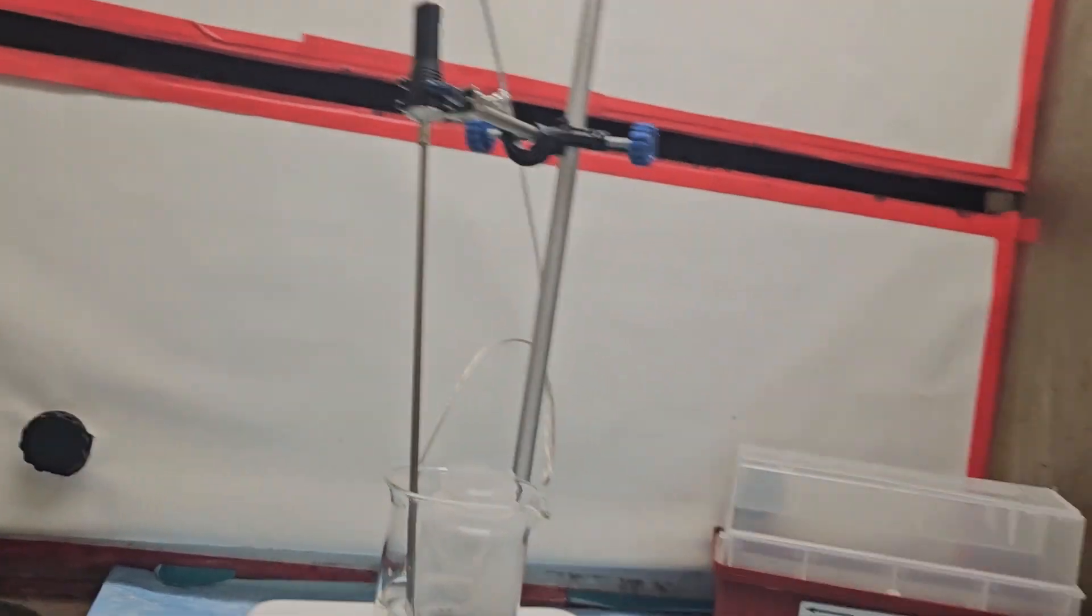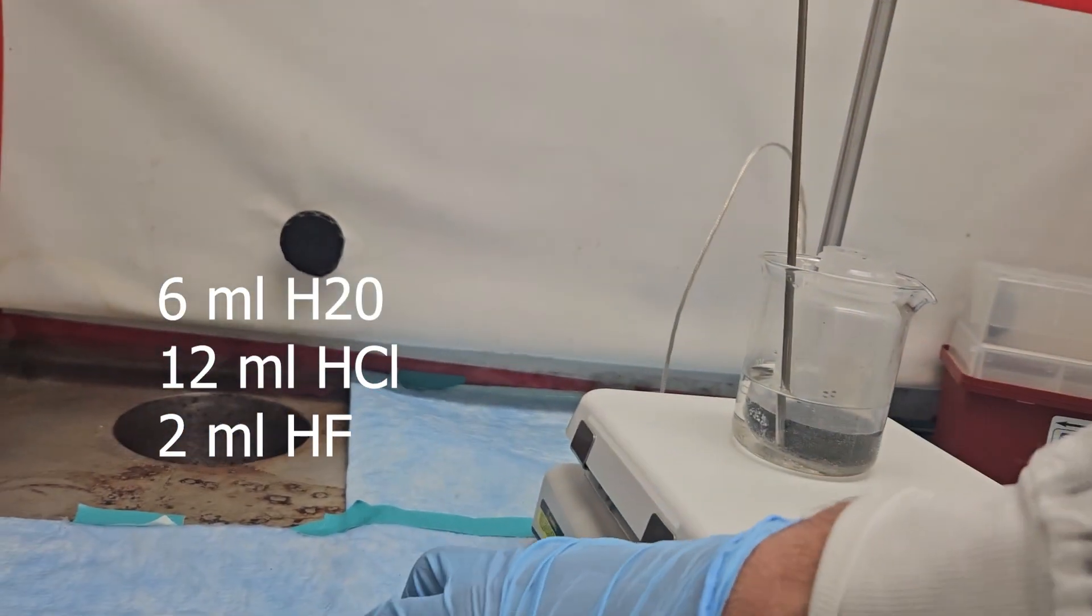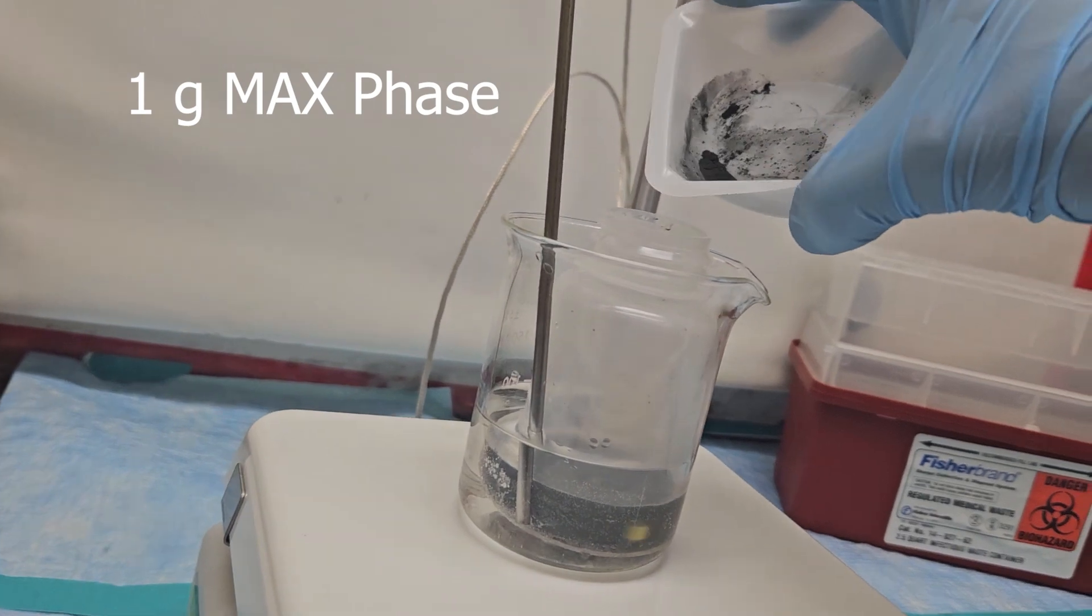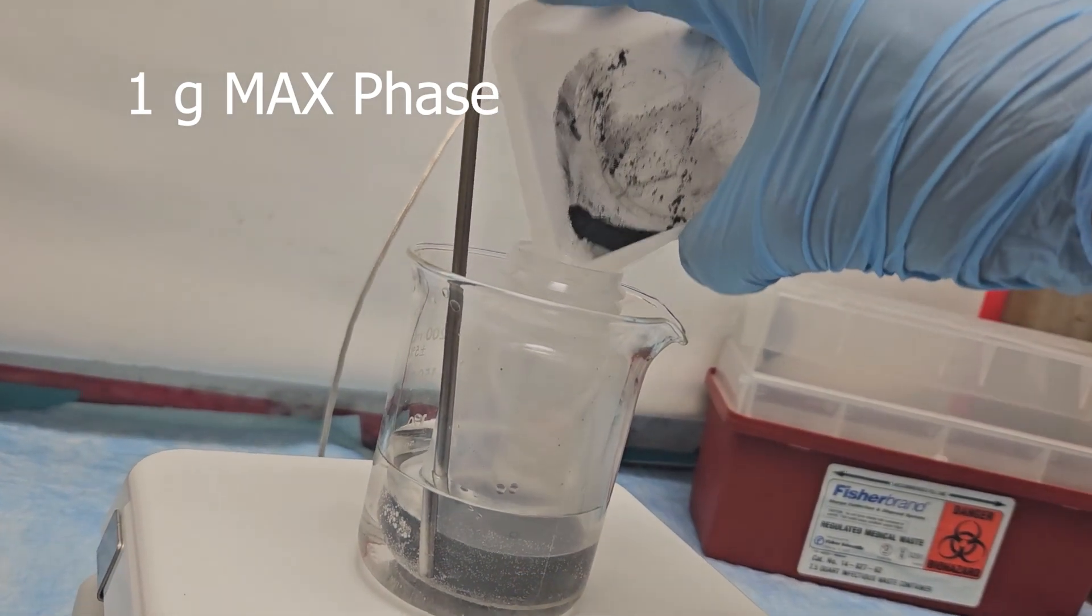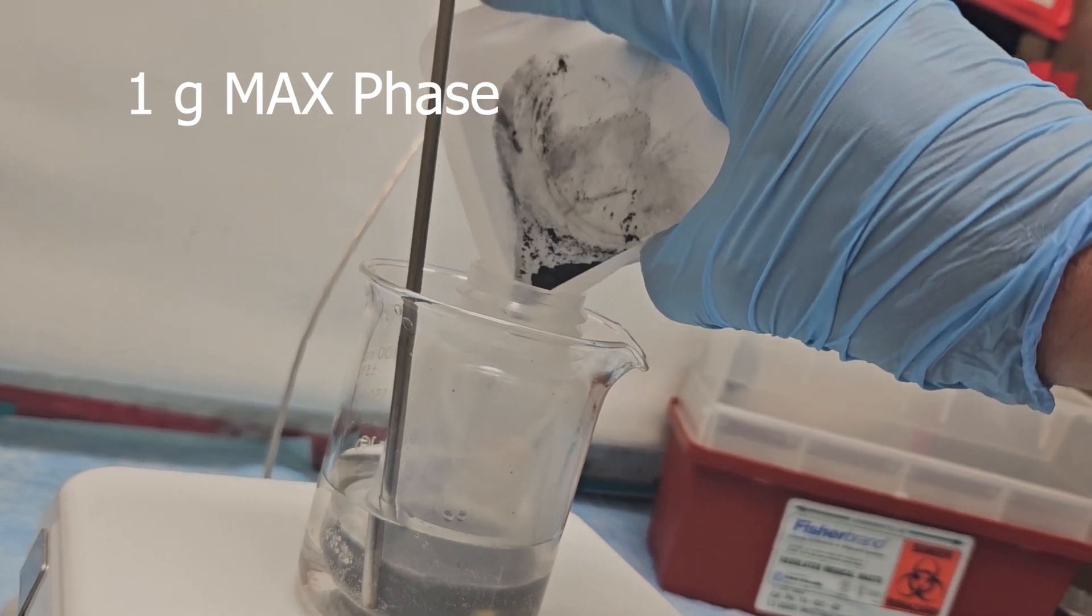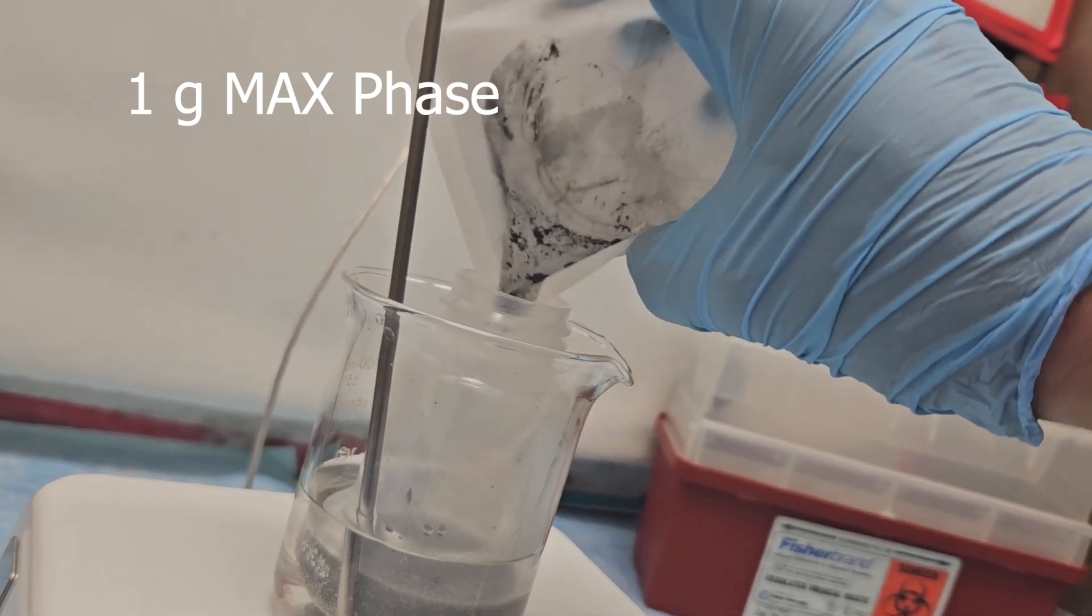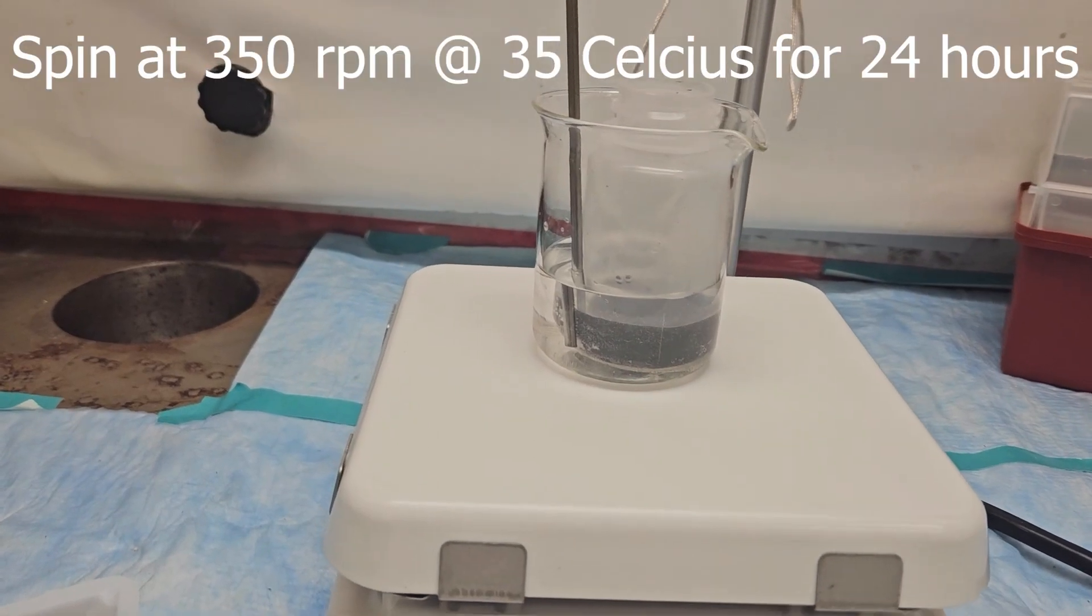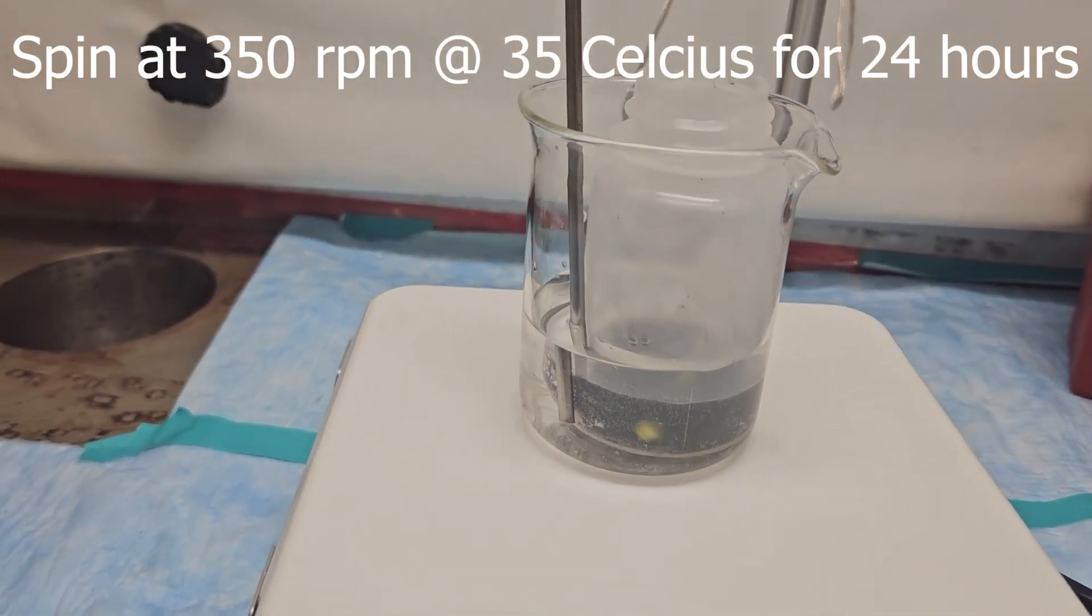Next, on a temperature-controlled mixing plate, combine 6 milliliters of water with 12 milliliters of hydrochloric acid and 2 milliliters of hydrofluoric acid, as well as our 1 gram of MAX phase powder. This is to be spun at 350 rpm for 24 hours in a water temperature-controlled bath at approximately 35 degrees Celsius.